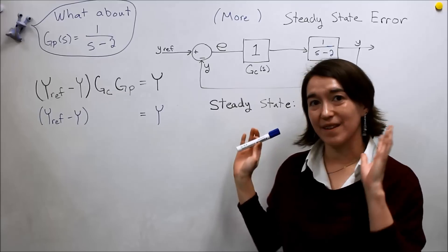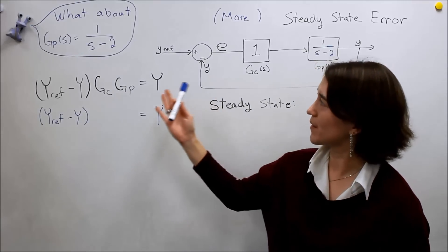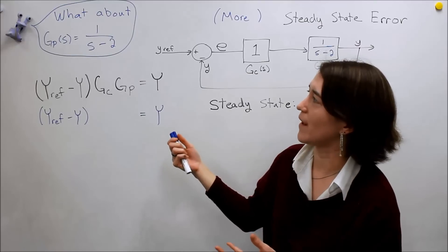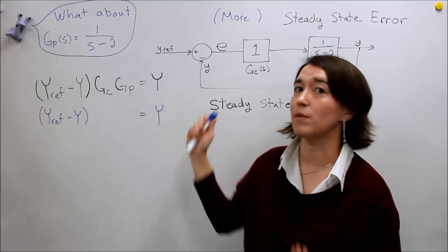So we're going to do a little bit more on steady state error because Valerie brings up a very good question. What about a system, for example, that has the plant of 1 over s minus 2?